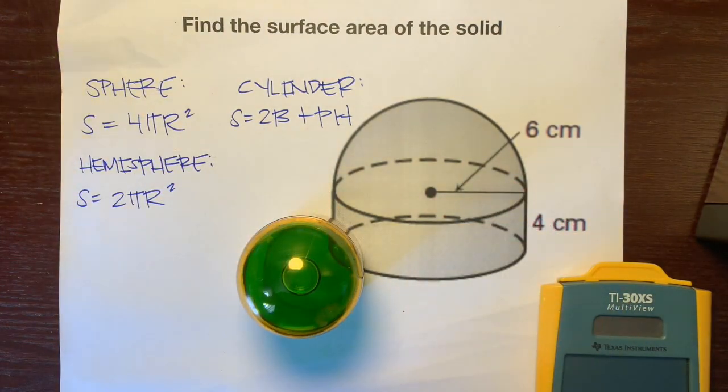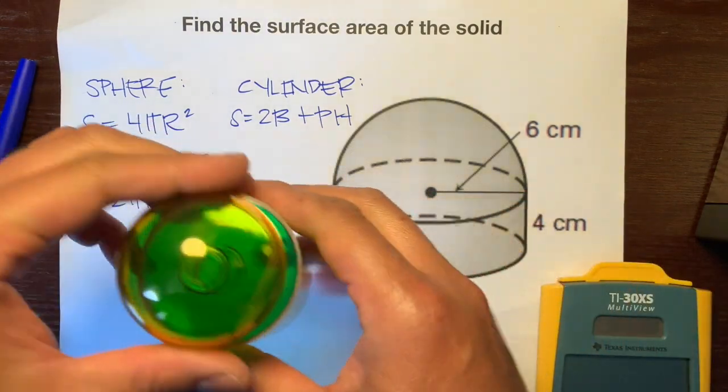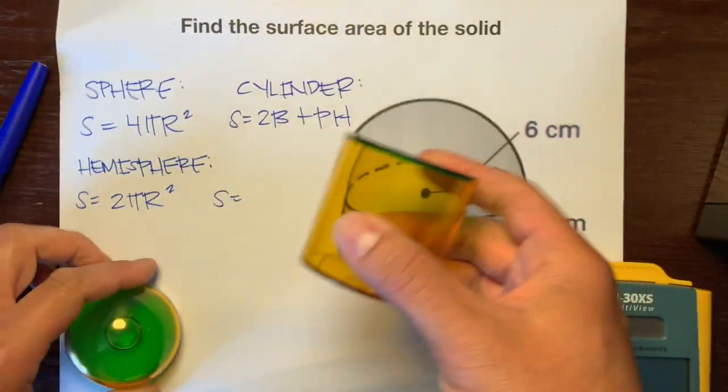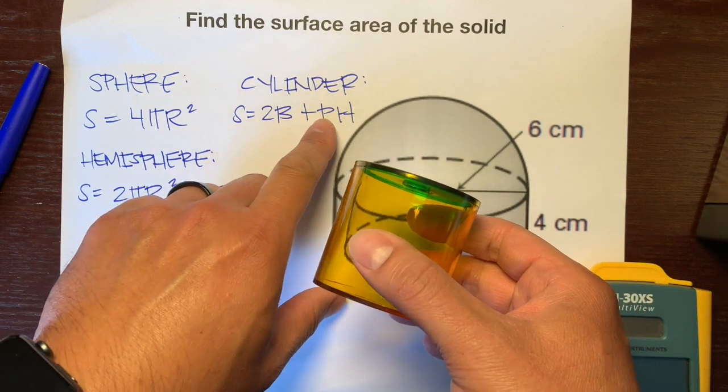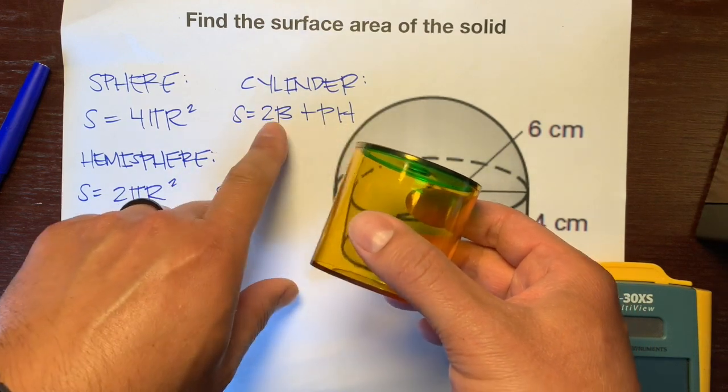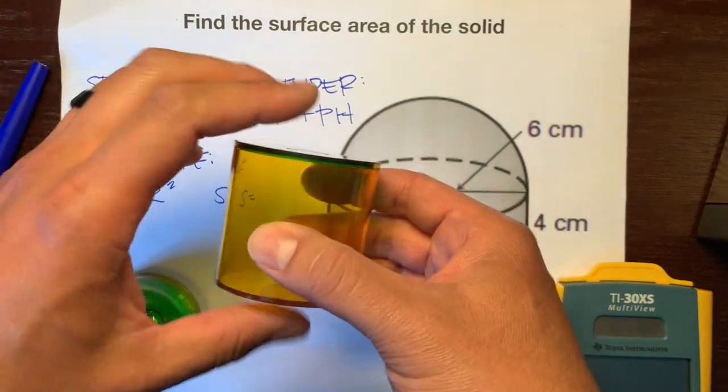And then, for this cylinder right here, we're going to change things. For the formula for a cylinder, it's two bases plus the base perimeter of the height. Two bases. However, here's the two bases for this cylinder.